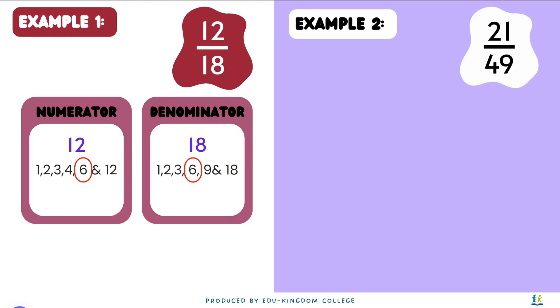Then, we divide both the numerator and the denominator by 6. 12 divided by 6 gives 2, and 18 divided by 6 gives 3. We need to put it into the new fraction, giving 2 thirds.